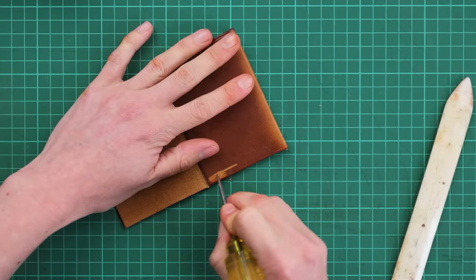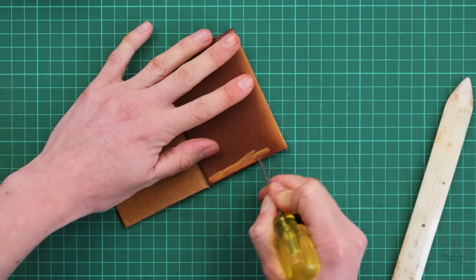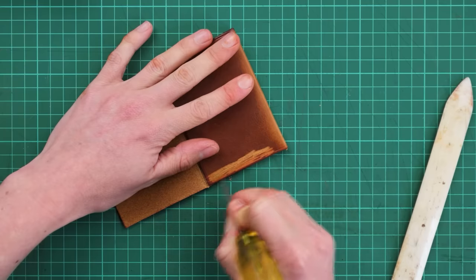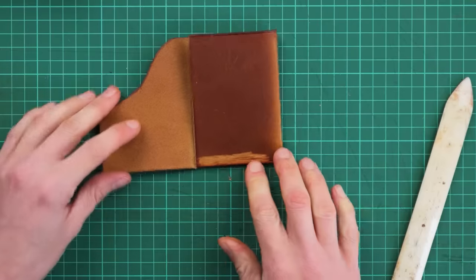So we just need to scrap up the grain side just a little bit of this central section now so that the glue has something more substantial to stick to.